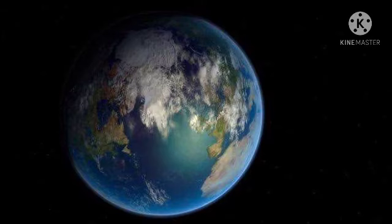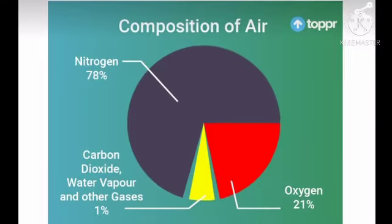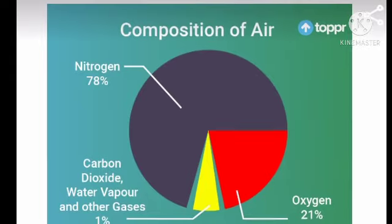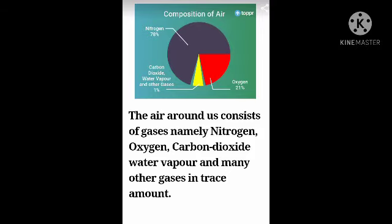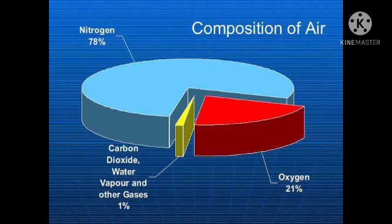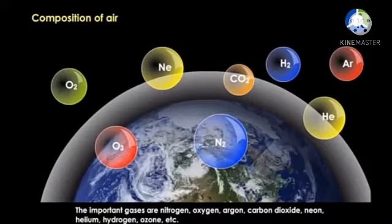We all know that air surrounds us everywhere on this planet. One cannot imagine the existence of life without air. The composition of air is not constant and changes from place to place. Air is not a single element — it is made up of different substances. For example, in polluted areas, since emission of carbon dioxide is very high, air over there contains a higher percentage of carbon dioxide. The main components of air are explained below.